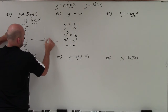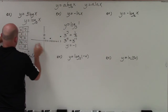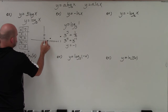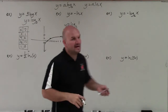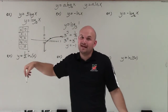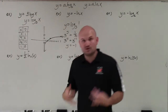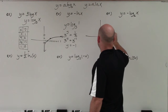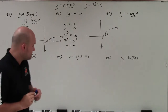So plotting these points: we have 3 comma 1, 9 comma 2, 1 comma 0, and 1/3 comma negative 1. No matter how small the fraction gets, it's going to keep approaching the y-axis but never actually cross it — that's why we call that the asymptote. The main important thing to understand is that our x-intercept is going to cross at 1 comma 0, and now all I'm going to do is apply the transformations.